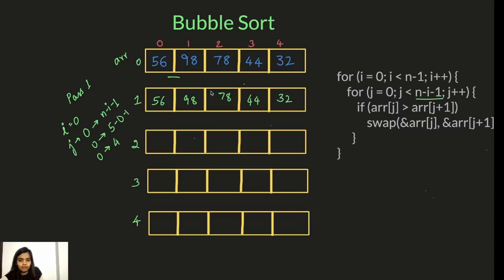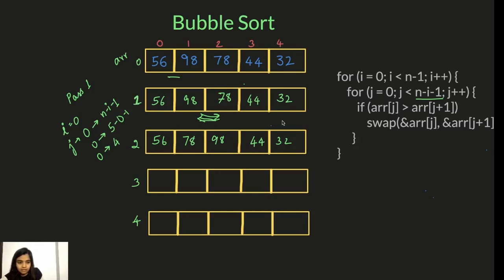The rest I copy as they are — 44 and 32. Now we compare indices one and two: is 98 greater than 78? Yes, so we swap the elements. 98 will come here. Now j is 2, so we compare indices two and three: is 98 greater than 44? Yes, so we swap it — 44 and 98. I copy the rest of the elements as they are.